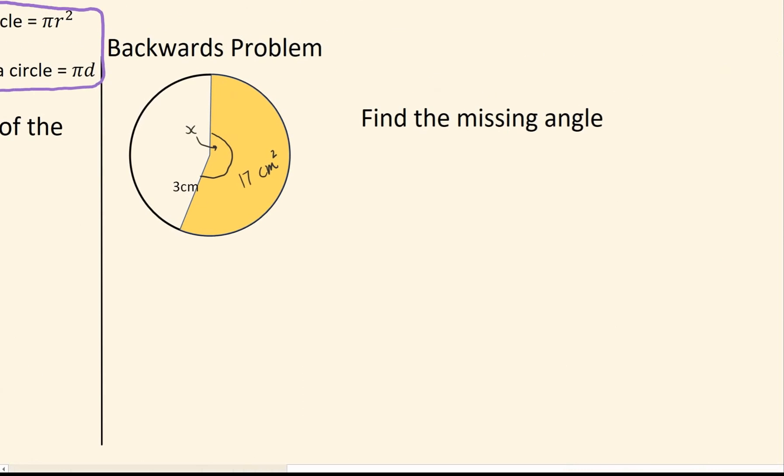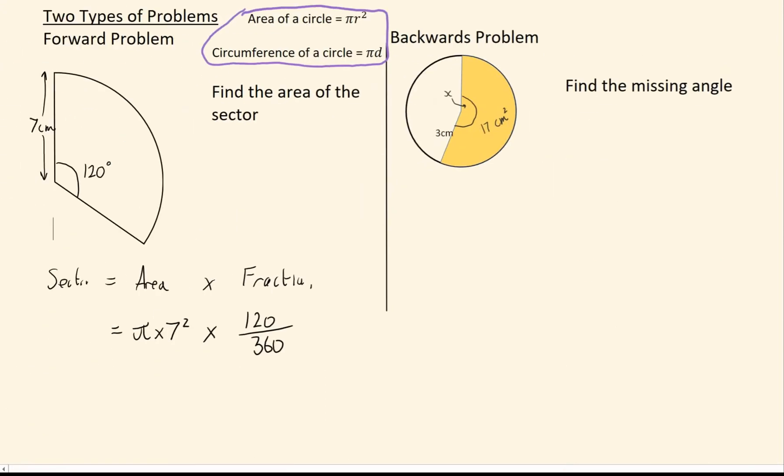What we're looking at here is basically the backwards problem. And again, I'm going to lay it out the same way. I know the sector, which in this case is 17, must equal the area, which is going to be pi times 3 squared, times by what fraction I have. And again, the fraction is given by what angle we have, so x over 360.